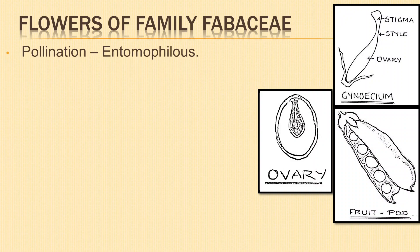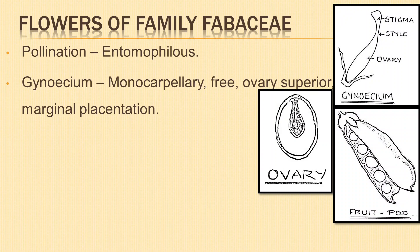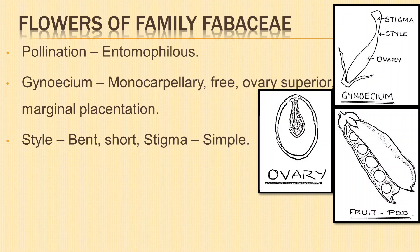Pollination occurs through insects, otherwise known as entomophily. The gynoecium is monocarpellary — one carpel present, free — with a superior ovary, sessile or stalked, with marginal placentation. In marginal placentation, the ovary is one-chambered and the placenta develops along the junction of the two margins of the carpel, called the ventral suture. The style is bent and short, while the stigma is simple.